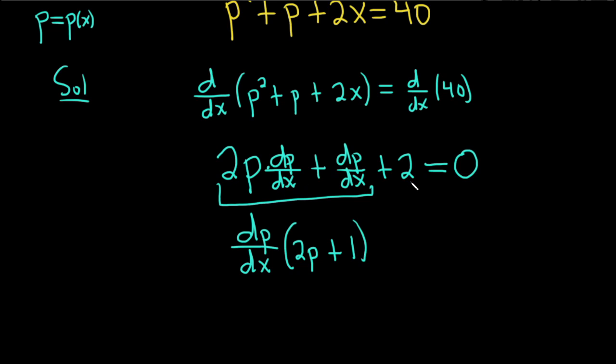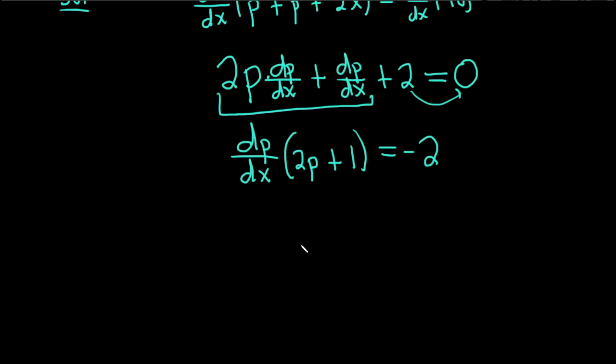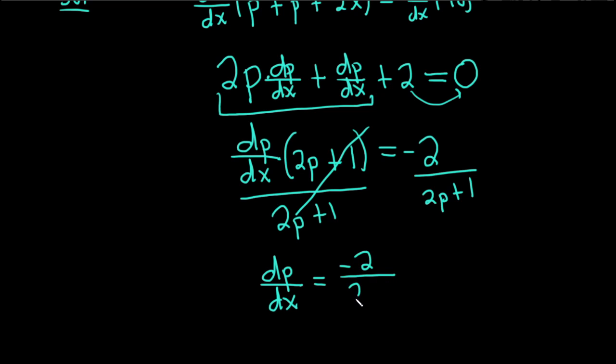This 2 we can subtract over. Almost done—we're looking for dp/dx, and it's being multiplied by all of this, so we just divide by all of it. So 2p plus 1 over 2p plus 1—these cancel, so we have dp/dx equal to negative 2 over 2p plus 1.